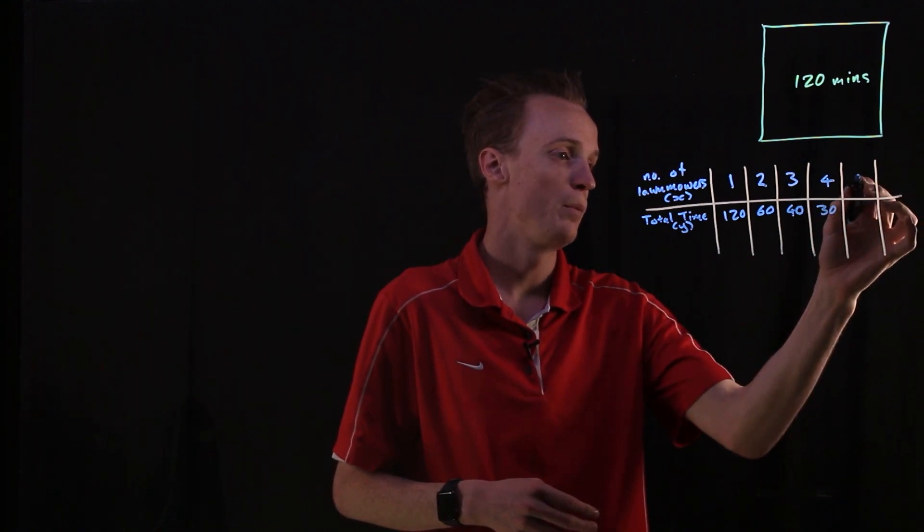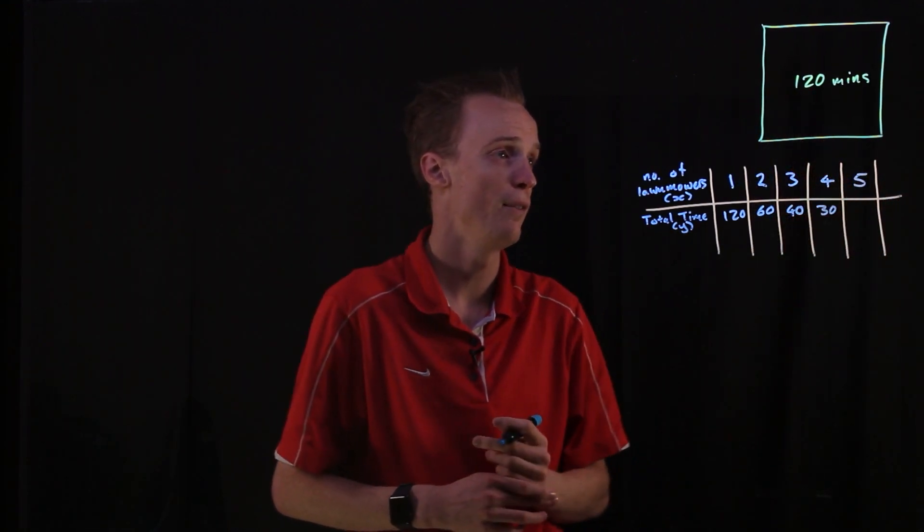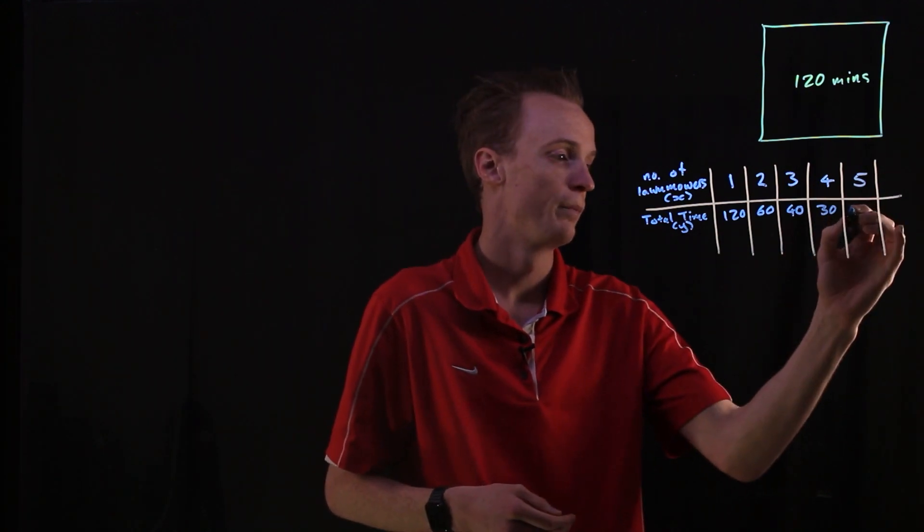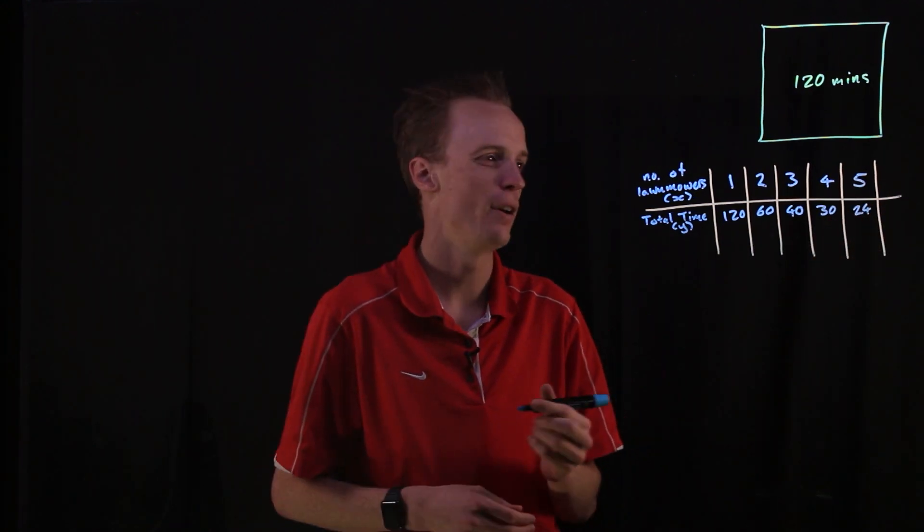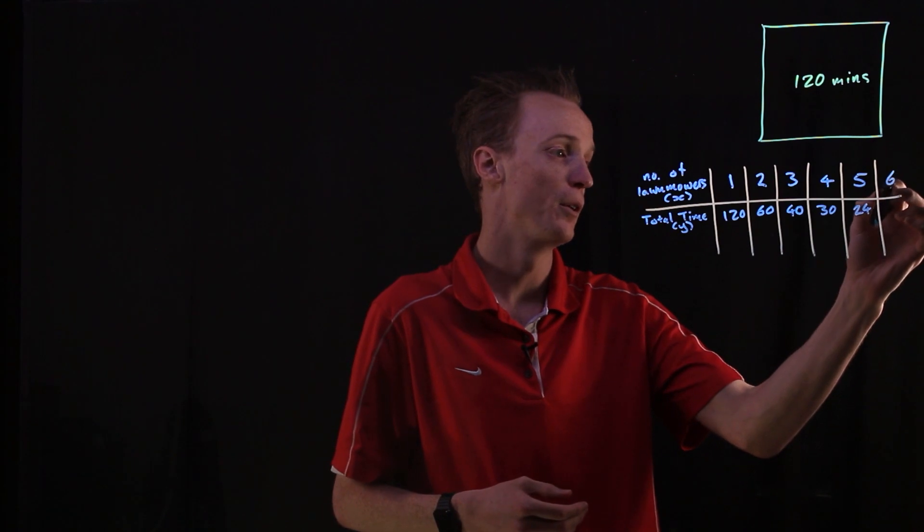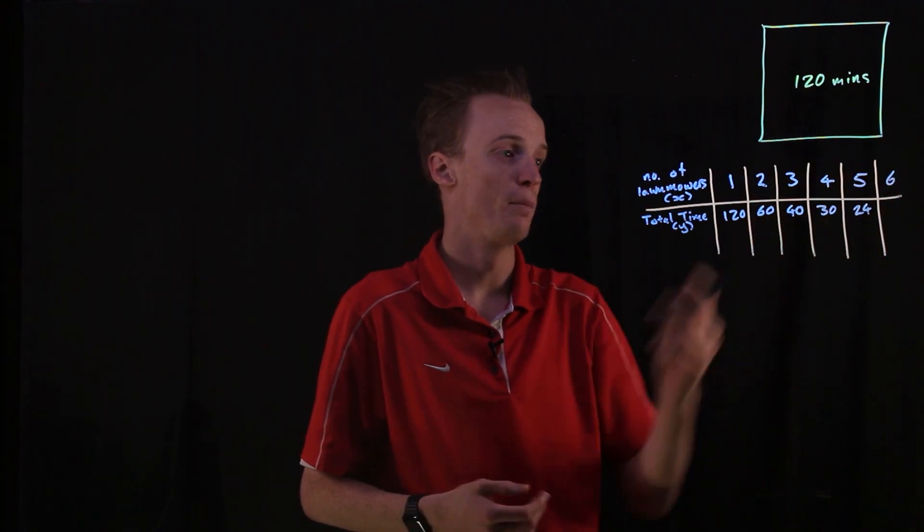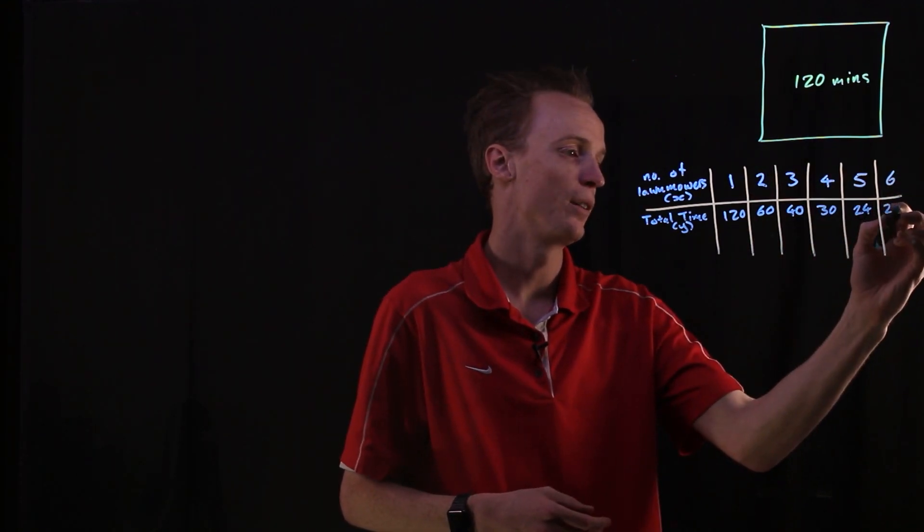At five will be a fifth. So divide this by five, and you'll get 24. And if we were finally to look at six ride-on lawnmowers, well, we'd divide this one by six. So that would be at 20 minutes.